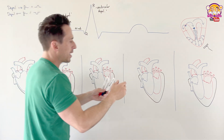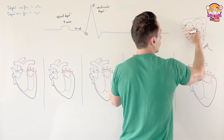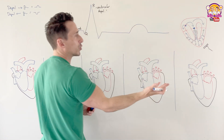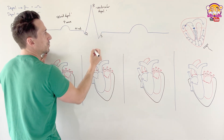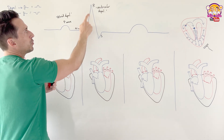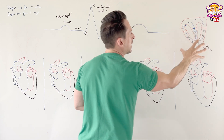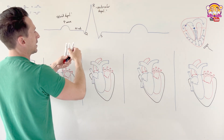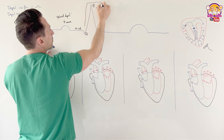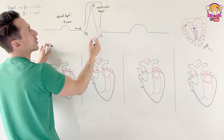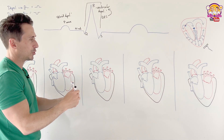Then we need to depolarize the rest of the ventricular walls — that's short, sharp, and away from the lead, giving us a final wave down called the S wave. Going from Q to R to S: that's the septum, most of the muscle, and then the end of the muscle. Together, Q, R, and S form the QRS complex, and the whole thing represents ventricular depolarization.